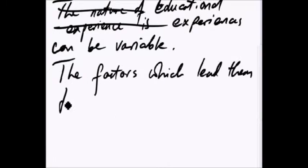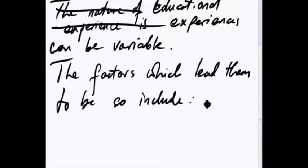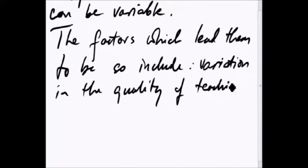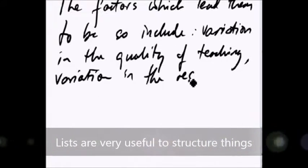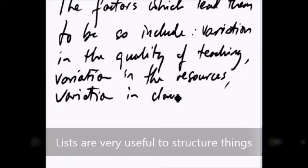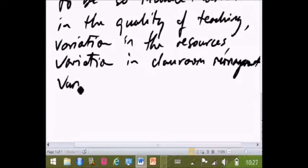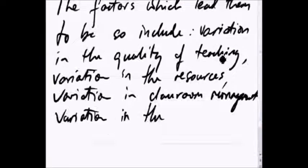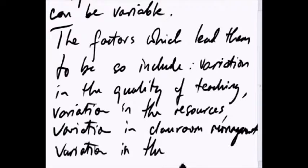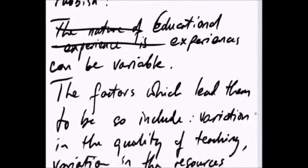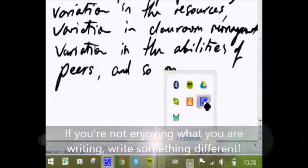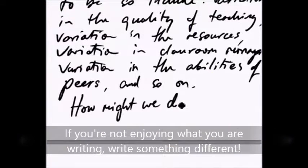The factors which lead them to be so include variation in the quality of the teaching, variation in resources. So I'm feeling, I'm getting into a vibe now. I can keep on writing variation. I'm kind of enjoying making these words on the screen in my case, but I'm enjoying sort of how this feels and looks, it's kind of flowing. So I'm talking about all the different kinds of variation, variation in the ability of peers. What other kinds of variation can I think of? But it doesn't matter, I'll just leave that.